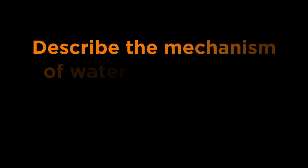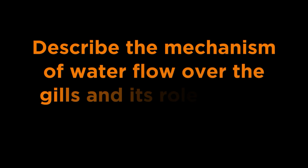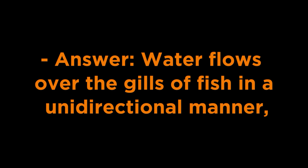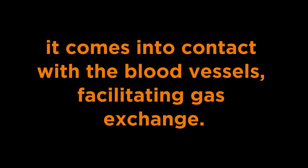Question 4 - Water Flow: Describe the mechanism of water flow over the gills and its role in gas exchange. Answer: Water flows over the gills of fish in a unidirectional manner, driven by the pumping action of the fish's mouth and operculum gill covers. As water flows over the gill lamellae, it comes into contact with the blood vessels, facilitating gas exchange.